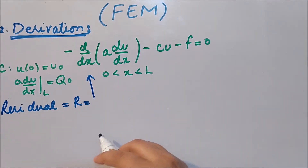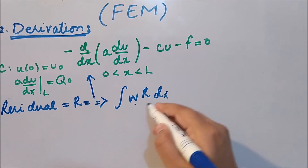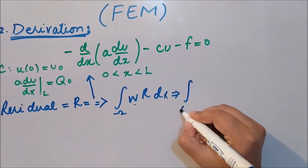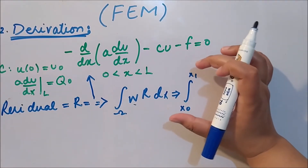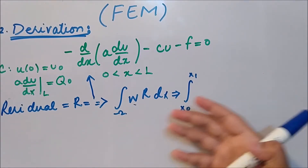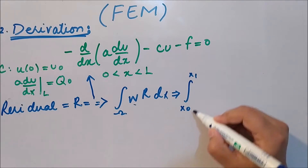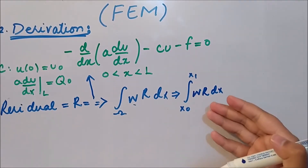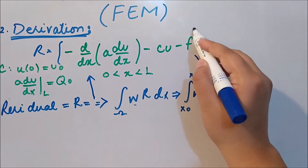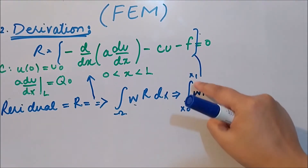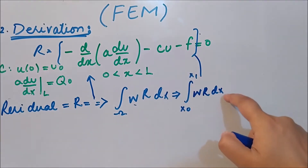The second part is to place the residual into the weighted residual statement. The weighted residual statement is the integral of omega times the residual dx over the domain. The domain is from x_node to x_1 for the first element. We write this weighted integral statement for every element, since we are deriving element-level equations. We know the domain x_a to x_b on each element, and we must integrate the residual R over that domain.